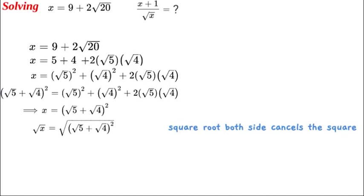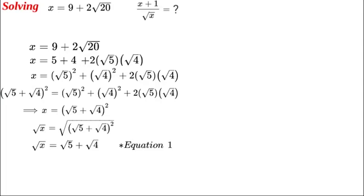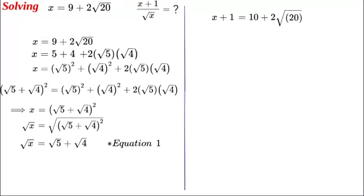Now let's examine x plus 1. We split up this side: if we add 1 to the 9 we get 10. So x plus 1 equals 2 times the square root of 5 times the square root of 5 (since the square root of 5 squared is 5), plus 2 times the square root of 5 times the square root of 20.